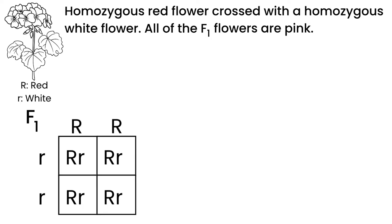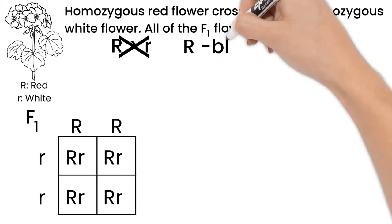That is because, in this case, the allele for red flowers does not overpower the white, but instead blends with it to create pink.